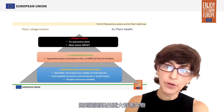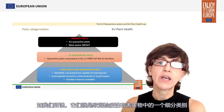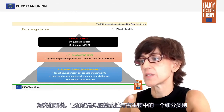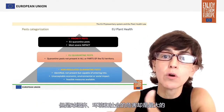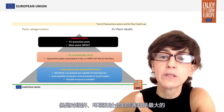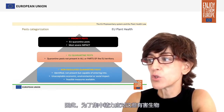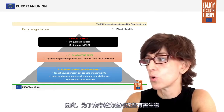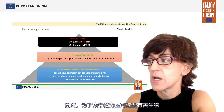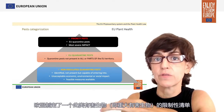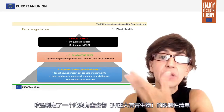Going back to priority pests, as we said, they are a subset of the European Union quarantine pests. These are pests whose potential economic, environmental, or social impact is most severe. In order to allow efforts for the control of Union quarantine pests to concentrate on these ones, a restricted list of such priority pests is established.